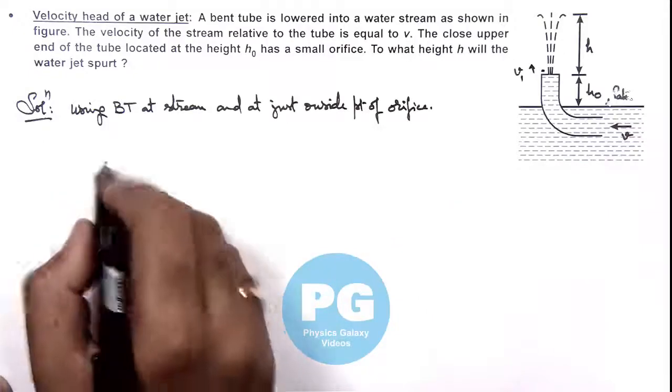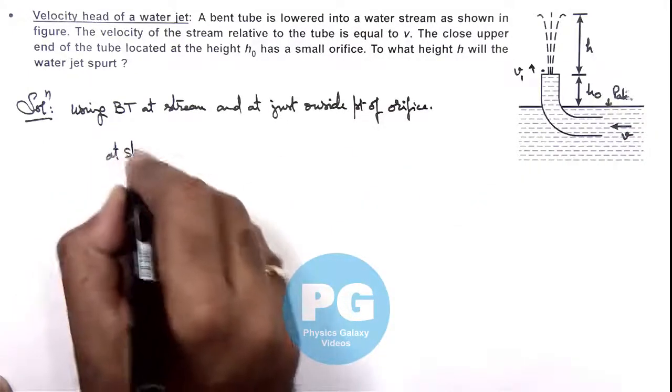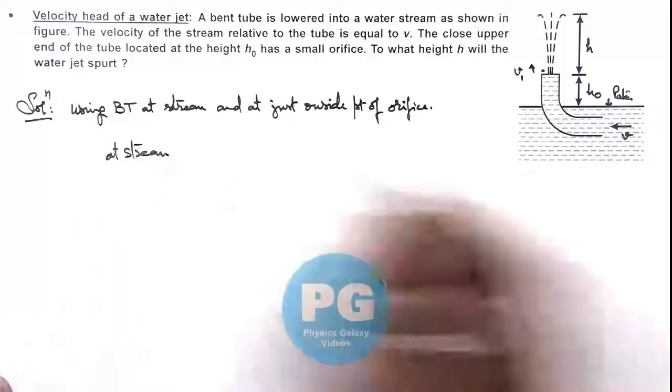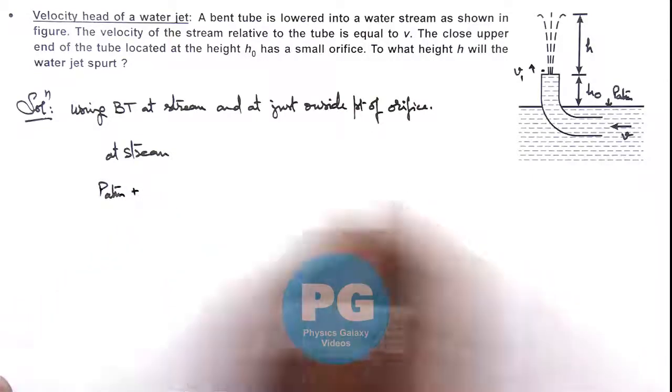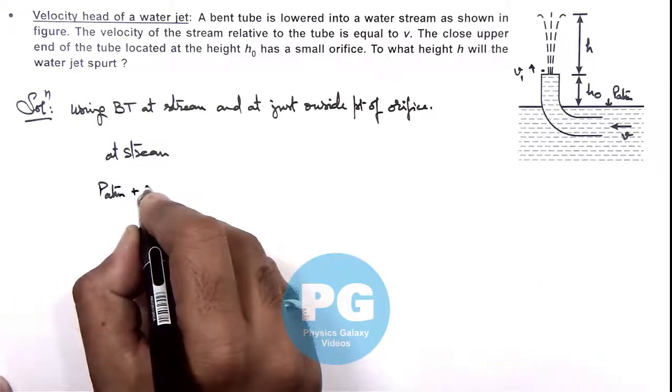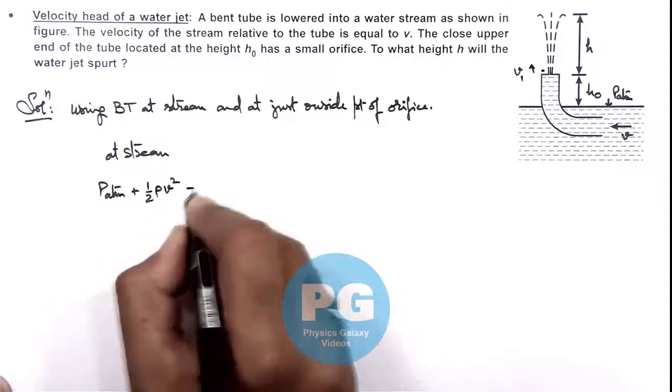So in this situation we can use, at the stream, if we use the pressure energy this P_atmospheric plus the kinetic energy of stream per unit volume is half rho v square, here is equals to